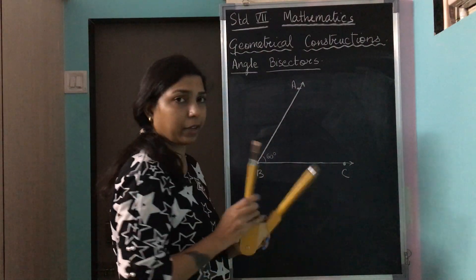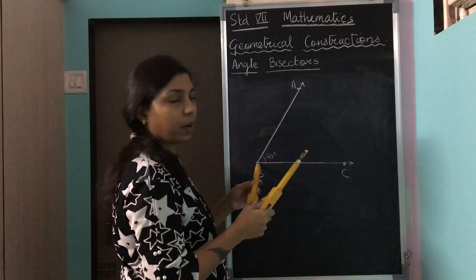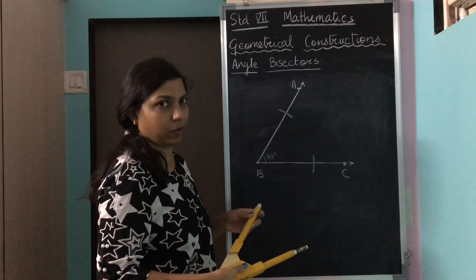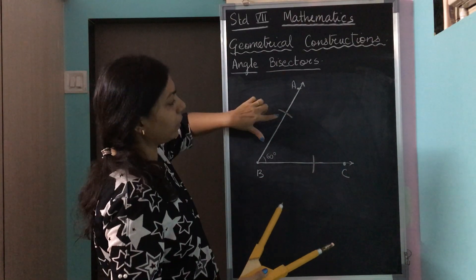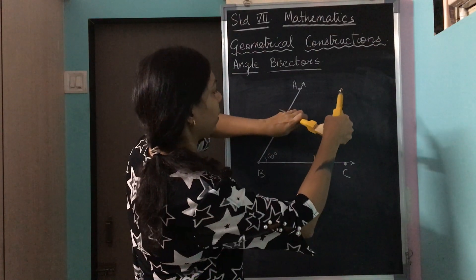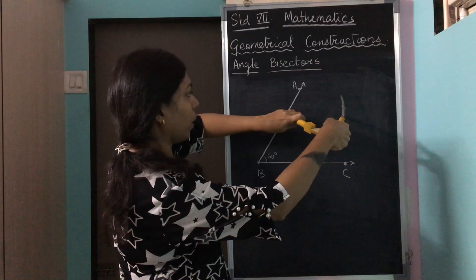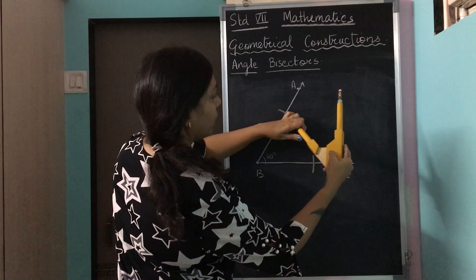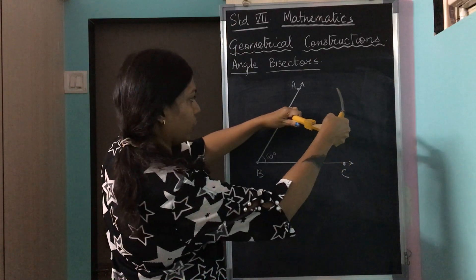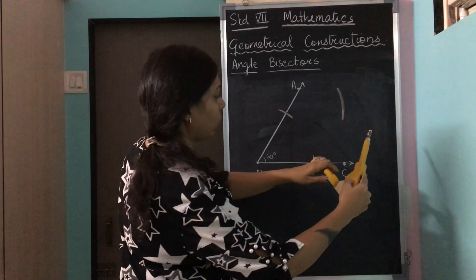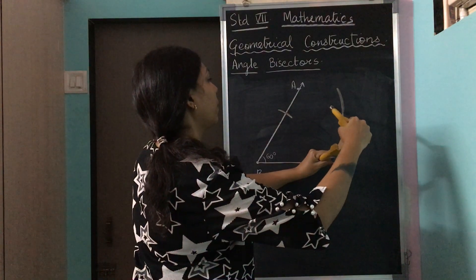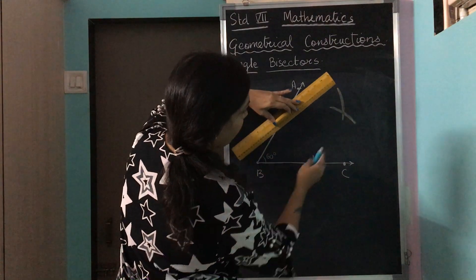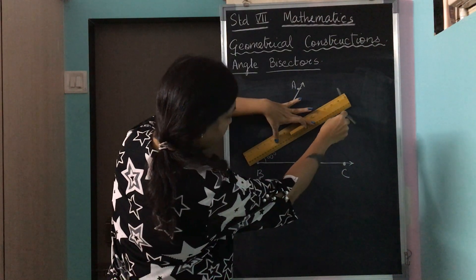So how do we go about doing this? We take the compass, keep it on point B, and draw arcs on both sides of the angle. We get two arcs. Then we place the pointer on the first arc and make one more arc. Then we place the pointer on the second arc and draw another arc, crossing the first one to form an X mark.